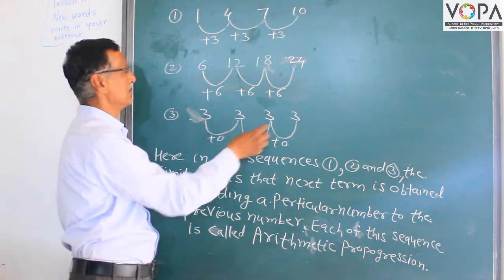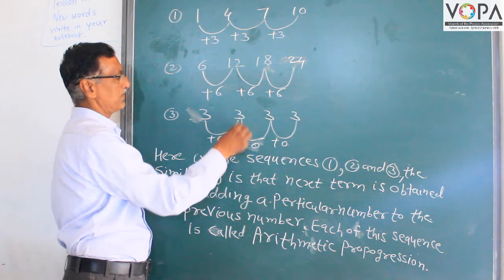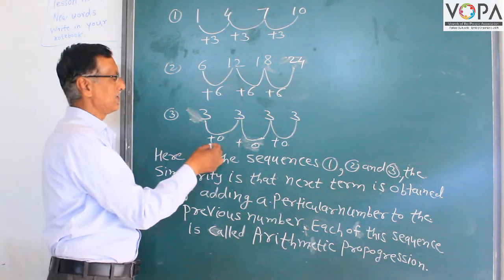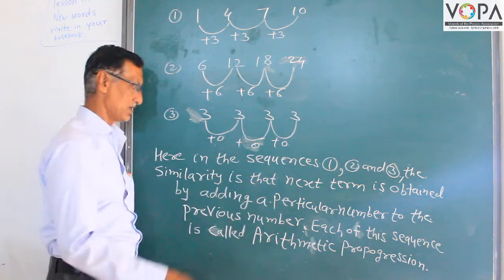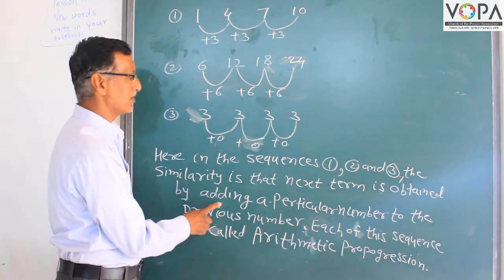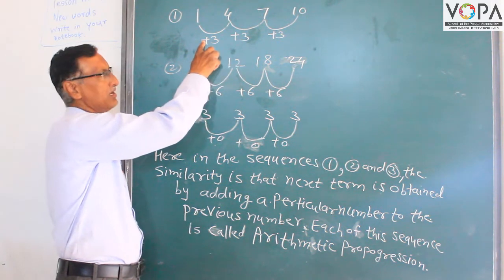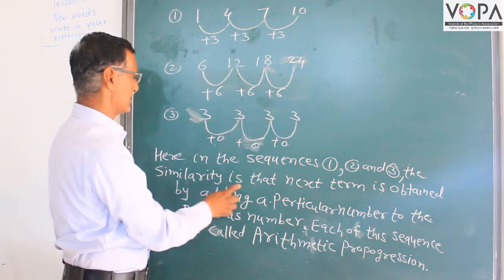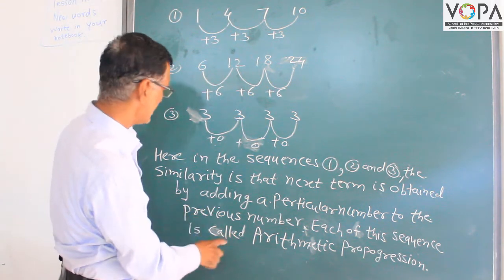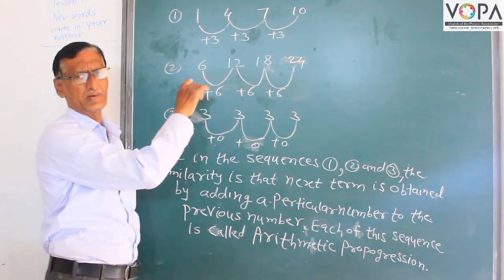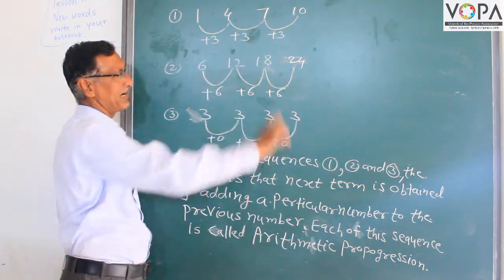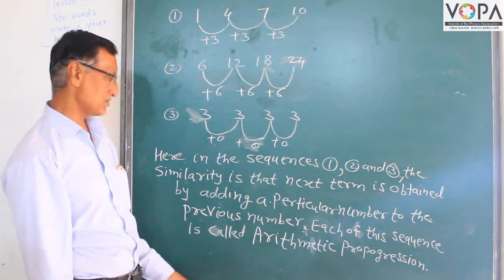A third example is 3, 3, 3, 3, 3 where 3 plus 0 equals 3 each time — the same number 0 is added, so this is also a sequence. The next term is obtained by adding a particular number to the previous term. When the same particular number is added to each previous term throughout a sequence, that sequence is called an Arithmetic Progression, or AP. For example 1, 4, 7, 10 and 6, 12, 18, 24 are arithmetic progressions because the same number is added each time.